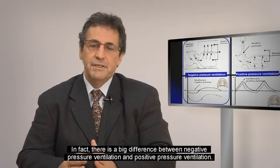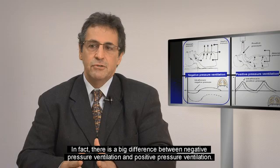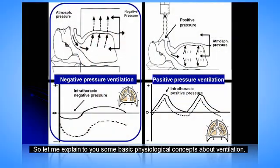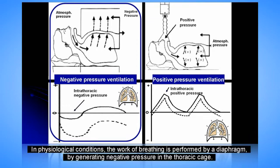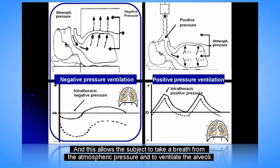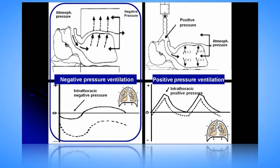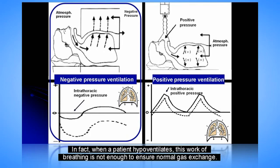There is a big difference between negative pressure ventilation and positive pressure ventilation. In a physiological condition, the work of breathing is performed by the diaphragm by generating negative pressure in the thoracic cage, and this allows the subject to take a breath from atmospheric pressure and to ventilate the alveoli. When a patient hypoventilates, this work of breathing is not enough to ensure normal gas exchange.